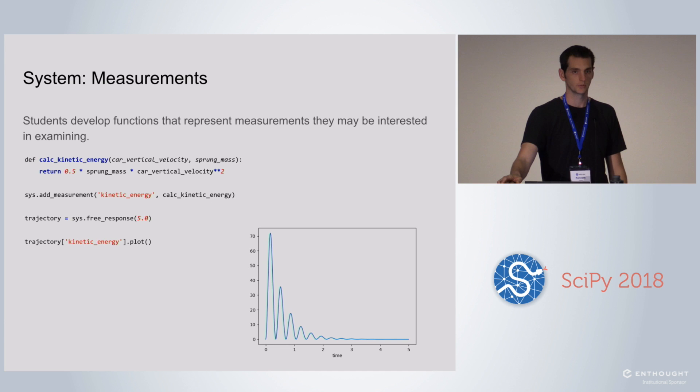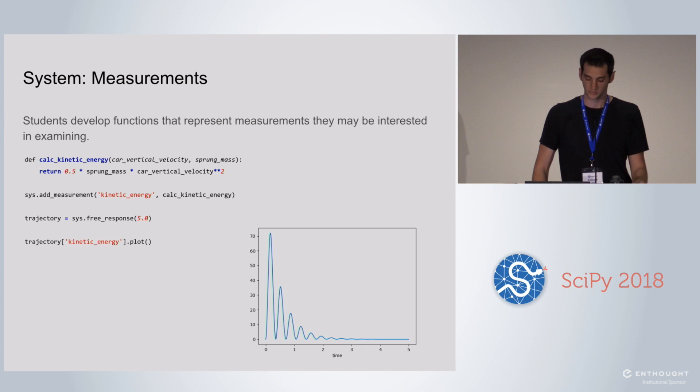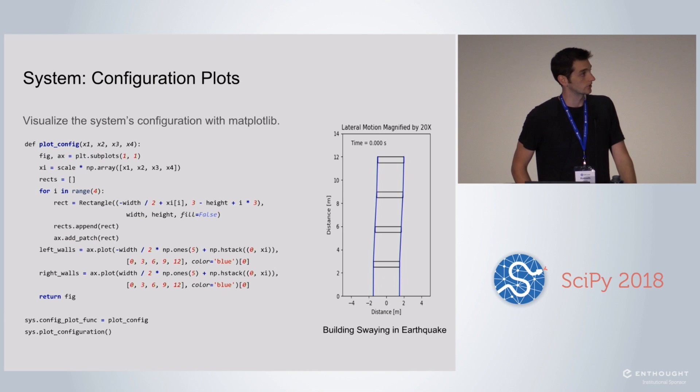The measurements can be things like kinetic energy, potential energy, things like that that might be useful to look at. It can also be things like just the velocity of some other point, rather than the center of mass of the system. So you can look at what other parts of the system are doing.